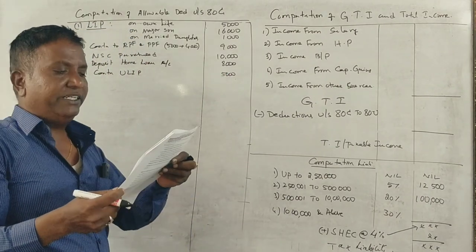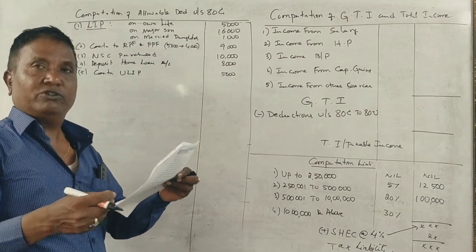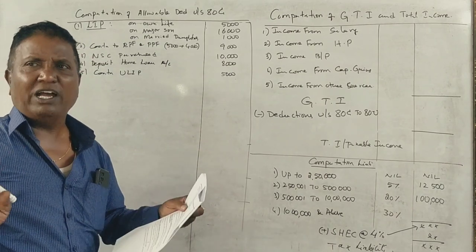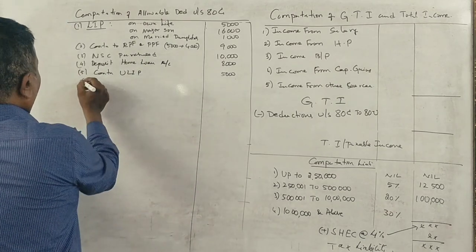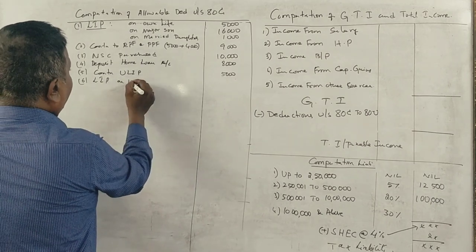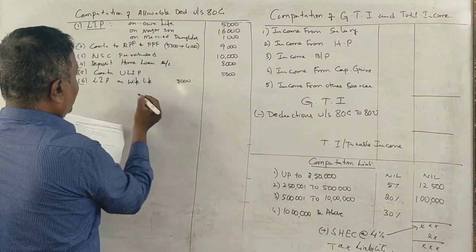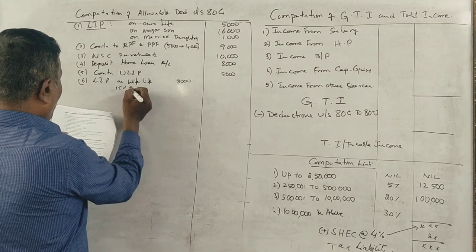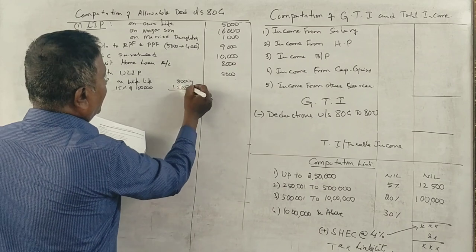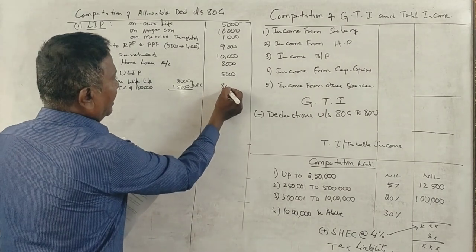Life insurance policy of 1 lakh taken in 2019 on wife's life. Premium paid is 8,000 out of agricultural income. LIC premium on wife's life — actual premium is 8,000. 15% of one lakh is 15,000. Since the policy is after 2013 (taken in 2019), the eligible amount is 8,000.